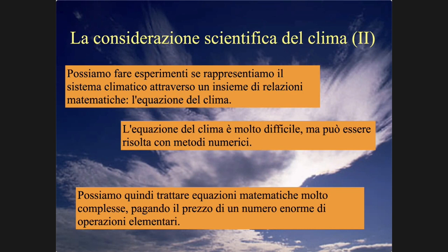So we have to create, if you want, a representation of the planet — of the climate processes — in order to exchange the complex mathematics of these objects that describe the circulation of the atmosphere and ocean with a huge number of experimental operations. In these virtual representations of the planet, which we call numerical models, we can do experiments: we can remove the Alps, we can remove all mountains and see what happens. This allows us to transform climatology from a descriptive science to a quantitative science.